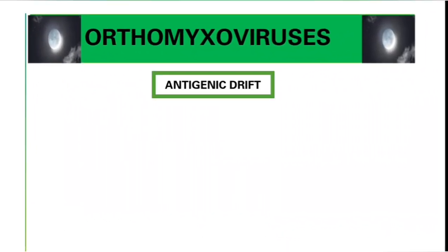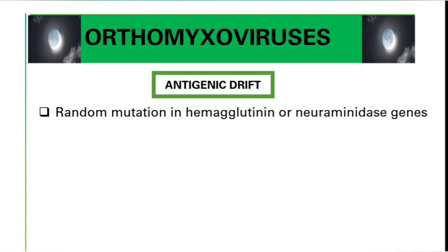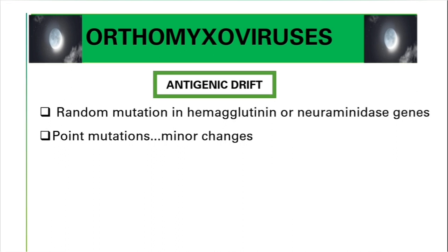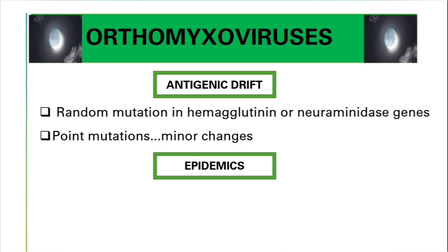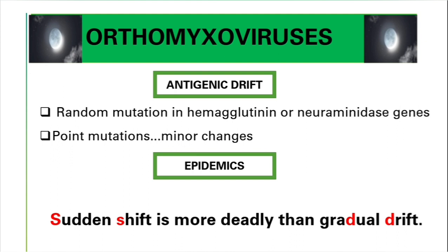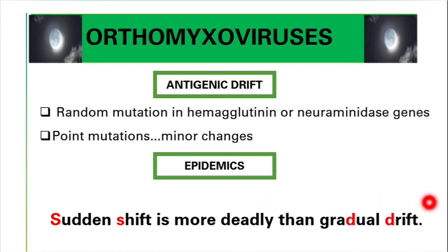Antigenic drift involves random point mutations in hemagglutinin or neuraminidase — the changes are minor. Antigenic drift is responsible for epidemics. A simple mnemonic to remember: 'Sudden shift is more deadly than gradual drift.' Sudden shift equals pandemic; gradual drift equals epidemic.